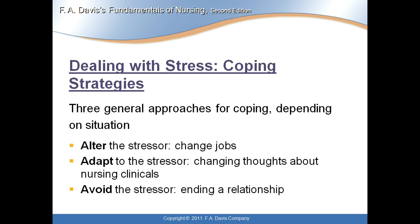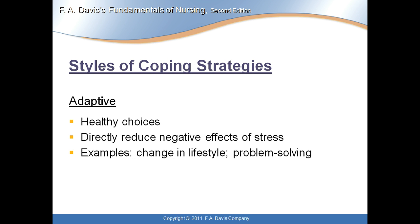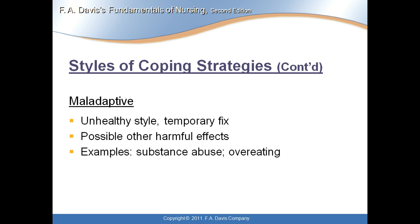Dealing with stress and coping strategies: there are three general approaches for coping depending on the situation. Coping strategies are thinking processes and behaviors a person uses to manage stress. To alter is to remove or change the stressor. To adapt is to change your thoughts and behavior. To avoid is to actually end the problem. Coping styles can be adaptive — making healthy choices and reducing negative effects — or maladaptive, which may relieve anxiety but has other harmful effects, like an unhealthy style or temporary fix.